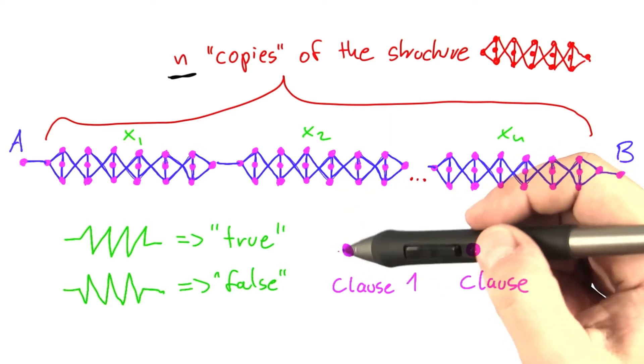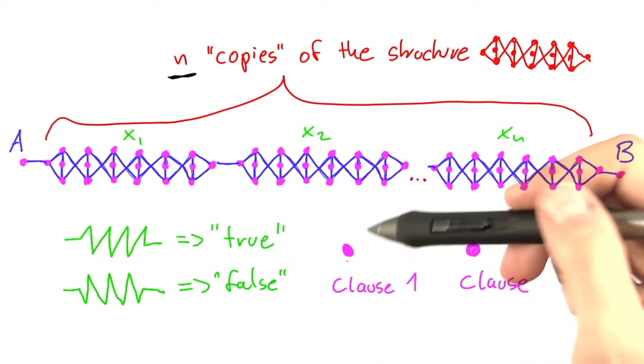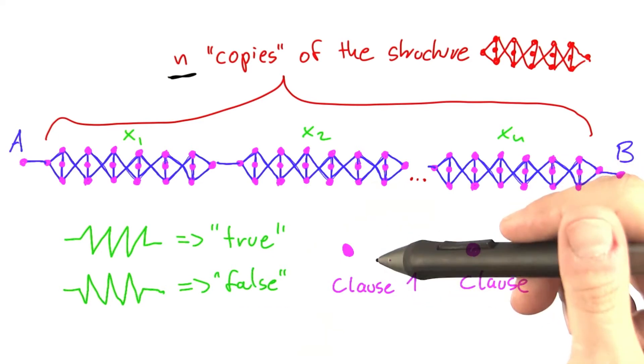And then of course, we need to make sure that we can only visit the city here if the corresponding variable, or if one of the corresponding variables of that clause, is satisfied in the right way.